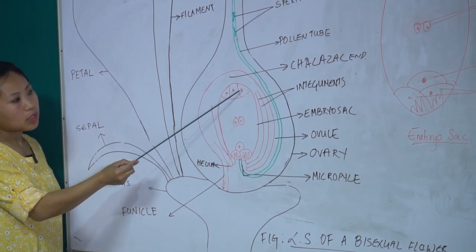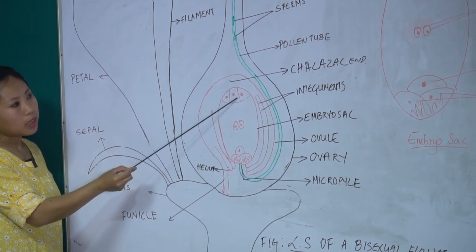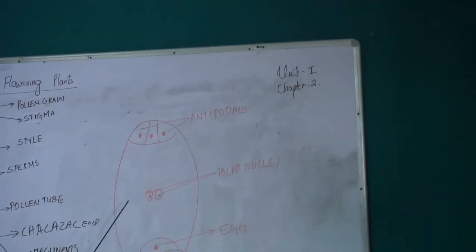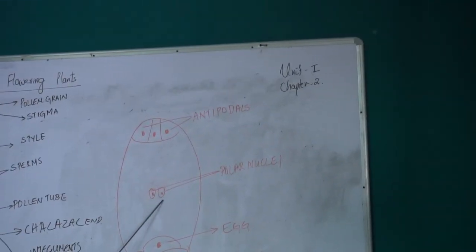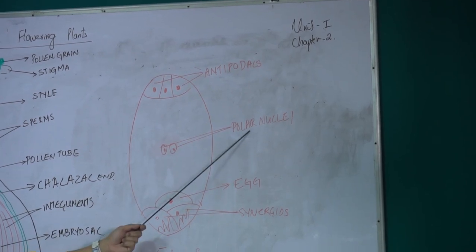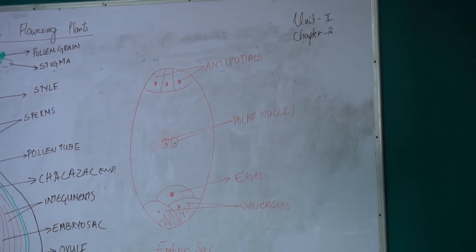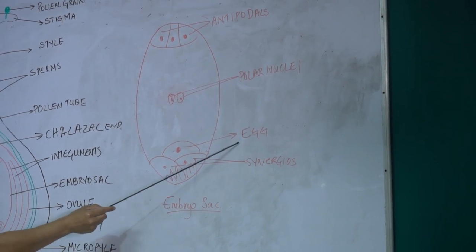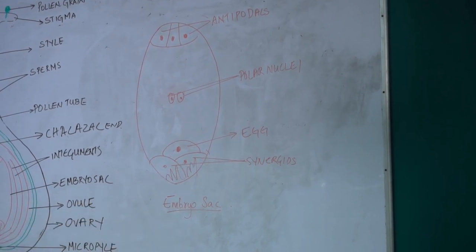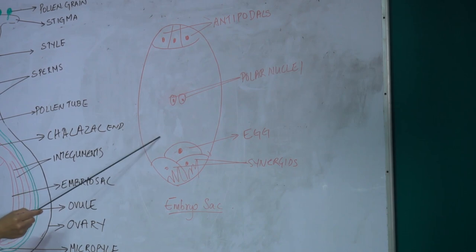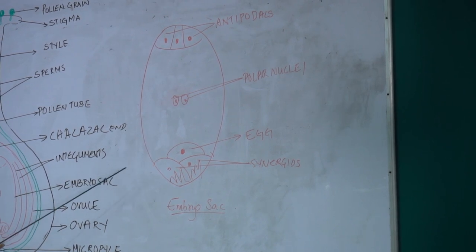There are eight nuclei inside the embryo sac. Three of these are arranged at the chalazal end forming the antipodal cells. Two in the middle of the embryo sac are called the polar nuclei. At the micropylar end, there are two synergids and an egg cell. This is the female gametophyte which takes part in sexual reproduction.